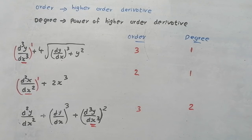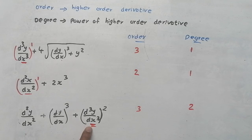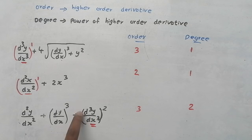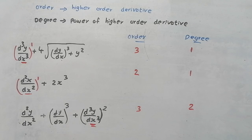So for finding order and degree: first of all, find the term having the highest order. Then for finding degree, degree is the power of that highest order derivative term.